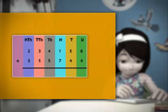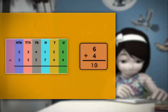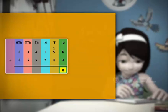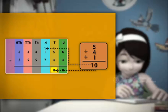As we know, we start adding the units first. So, 6 plus 4 is equal to 10. We put the 0 in the units column of the answer and carry over 1 in the tens column of the sum. So, we add 1 to 5 and 4 and get 10 as the answer. We then put the 0 in the tens column and carry over 1 to the hundreds column.